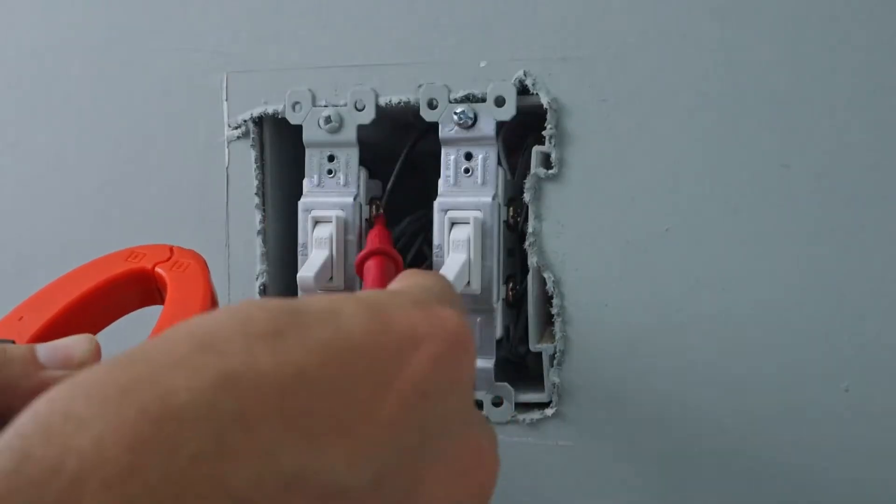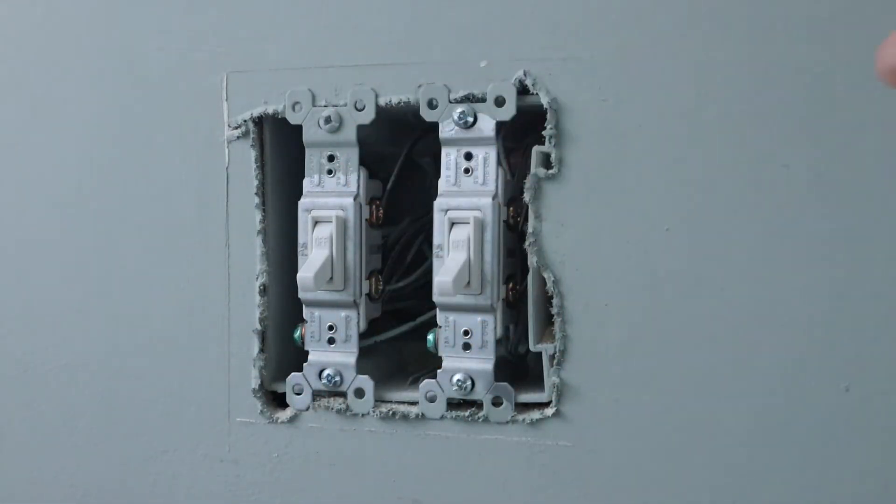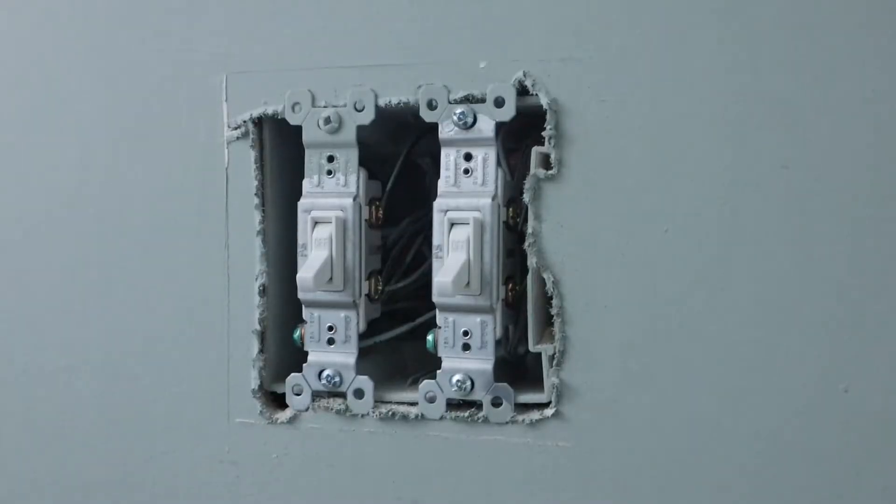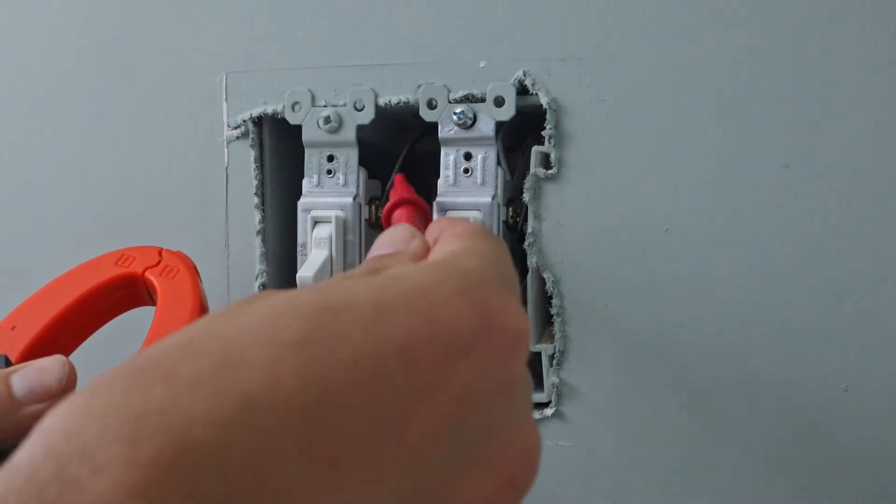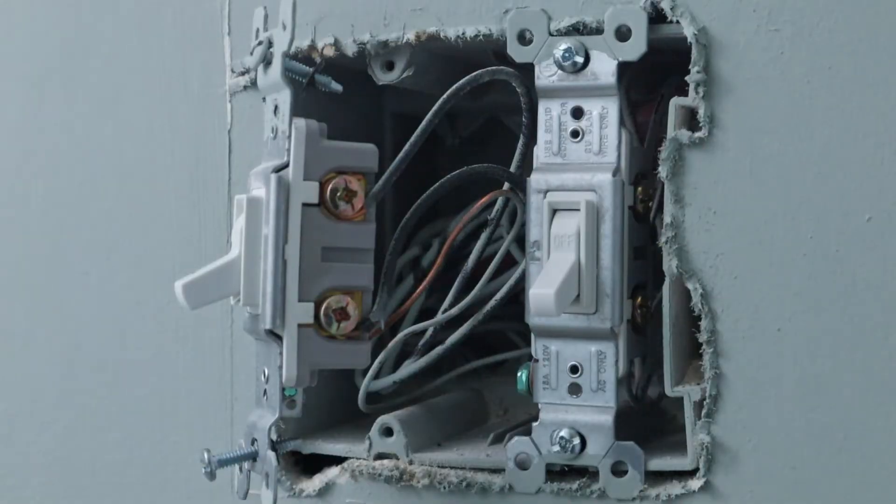All right, so our line wire is going to be this top wire. Now that we know that, we can now go out to the main panel and turn off the circuit breaker that's bringing the power to these switches. So now that the circuit breaker is off to these switches, we still need to use our multimeter again just to confirm that there's no power going to this light switch.